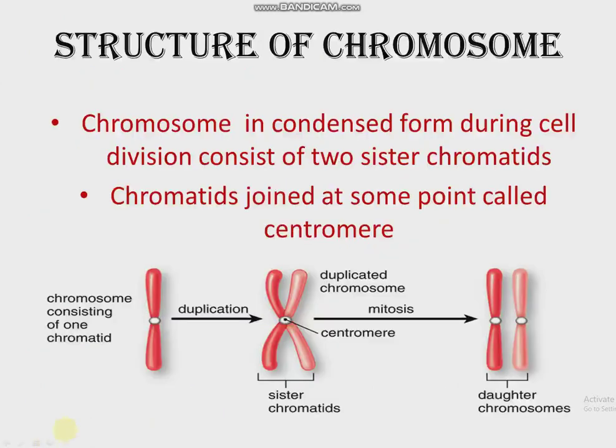In previous classes you learned the word genes as simply the unit of heredity. But here, the more advanced definition is: genes are specific sequences of nucleotides on a chromosome that encode a particular protein, which expresses in the form of some particular feature of the body. They are the units of heredity transferred from parents to offspring through chromosomes. Remember the definition of gene — it is asked in direct form like 'define gene,' or as 'what is the unit of heredity?' Your answer will be gene.